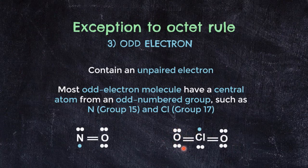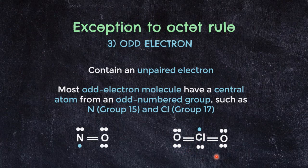For ClO₂: oxygen contributes 6 × 2 = 12 electrons, chlorine contributes 7, giving 12 + 7 = 19 electrons total — an odd number. In the Lewis structure, each oxygen has 6 valence electrons surrounding it, and chlorine has 7 electrons surrounding it. Counting all electrons in the structure confirms a total of 19 electrons, making ClO₂ another example of an odd-electron molecule.